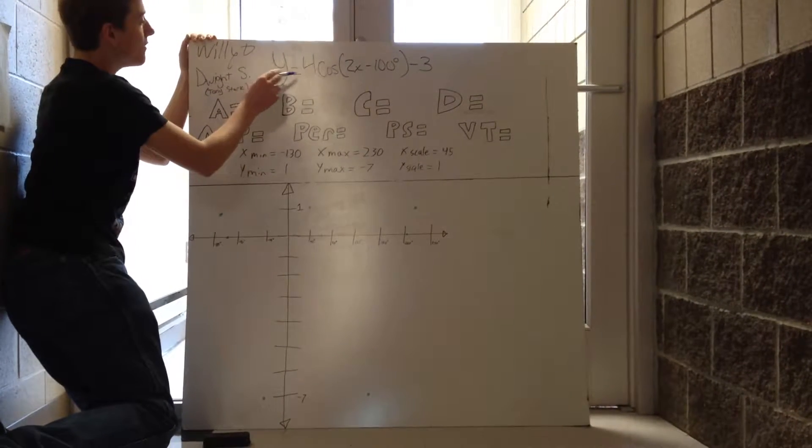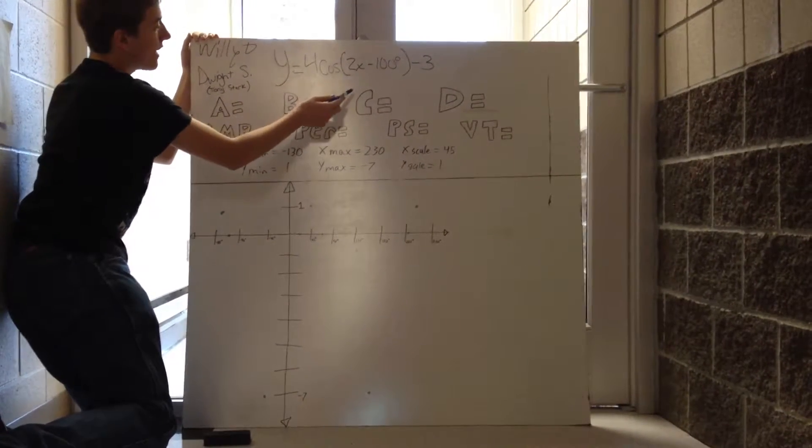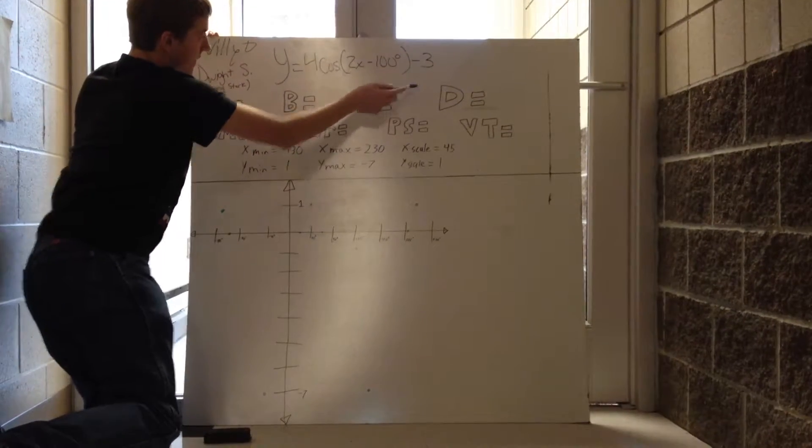So here's our equation: y equals 4 cosine of 2x minus 100 degrees, close parentheses, minus 3.